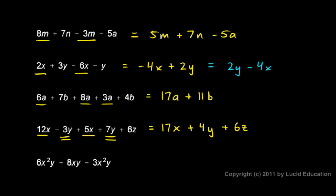And this one. 6x squared y. And then this 8xy. This has a different variable part because the x is squared here and it's not squared there. So the 6x squared y and the 8xy are not like terms. But this, the negative 3x squared y. Here I have x squared y. And there I have x squared y. So those are like terms.